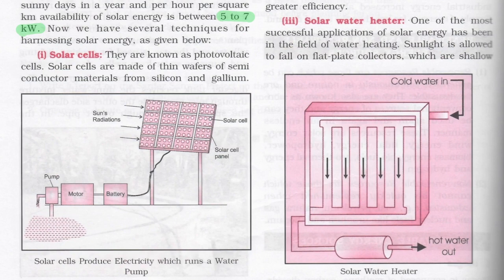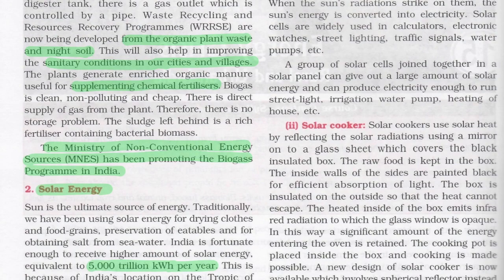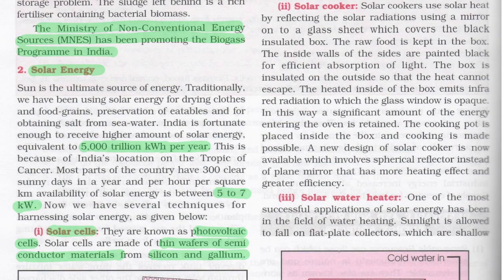The first technique for harnessing solar energy is solar cells, also known as photovoltaic cells. Solar cells are made up of thin wafers of semiconductor material — silicon and gallium. When the sun's radiation strikes them, the sun's energy is converted into electricity. Solar cells are widely used in calculators, electronic watches, street lighting, traffic signals, water pumps, etc.